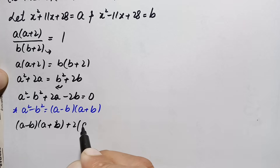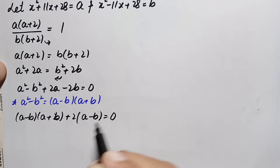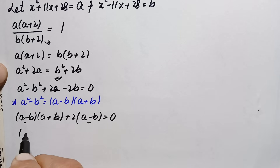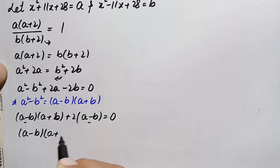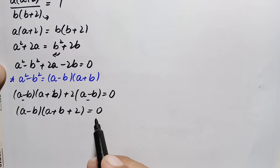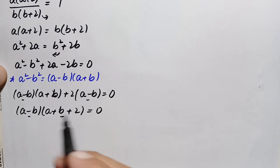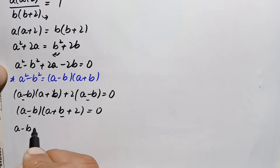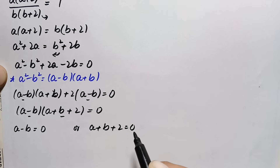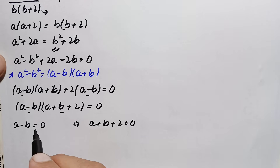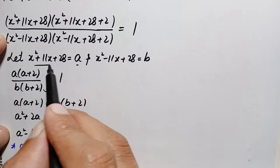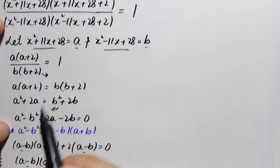There is a factor of 2 common in the terms 2a - 2b, so taking that out gives (a-b)(a+b) + 2(a-b) = 0. There is a common factor of (a-b), so factoring gives (a-b)(a+b+2) = 0. Since the product is zero, either a - b = 0 or a + b + 2 = 0. We will now substitute back the values of a and b.